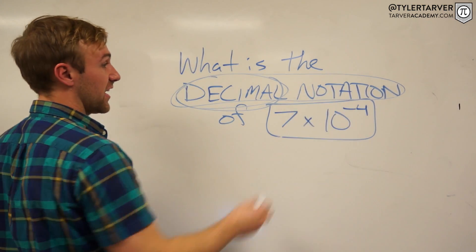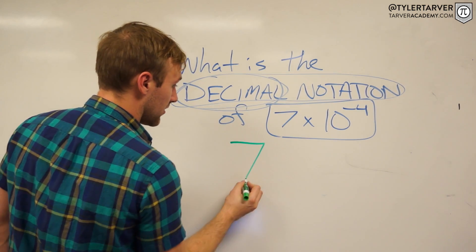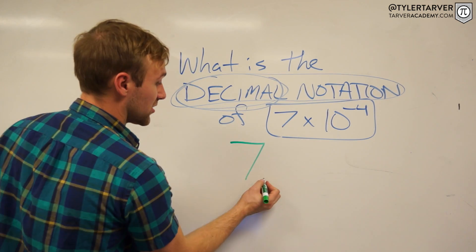So let's look at this problem. We've got 7 times 10 to the negative 4. First step: write your number. We've got 7. Now where is your decimal? Your decimal is right here.